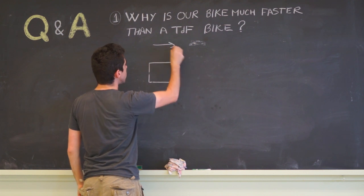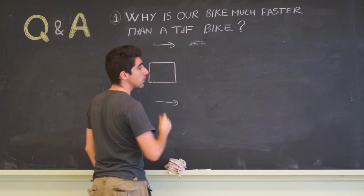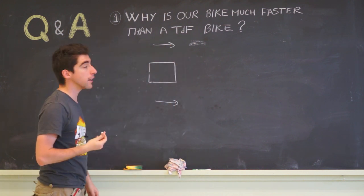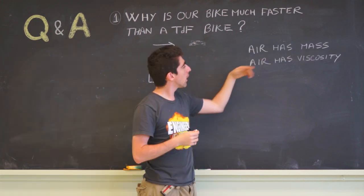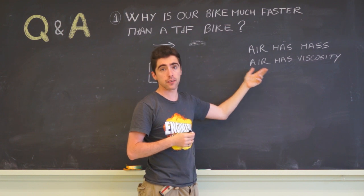So instead we have the air moving around the box. We have to understand a few things about air. Air has mass and air has viscosity.